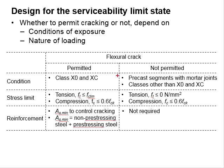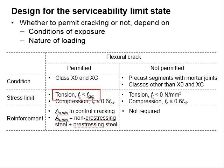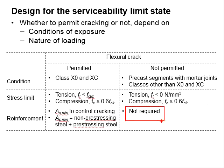The compression limit remains to be 0.6 FCK. However, when cracking is not allowed, no tensile stress is permitted. When cracking is allowed, the tensile stress has to be limited within FCTM. FCTM refers to the mean value of the axial tensile strength of concrete. When there is no tensile stress in the member, no reinforcement bar is required.